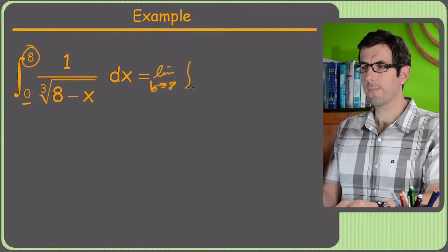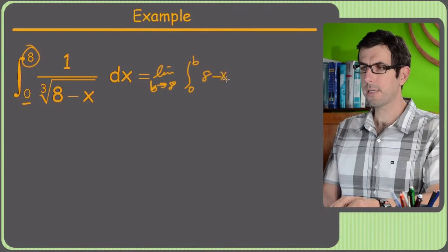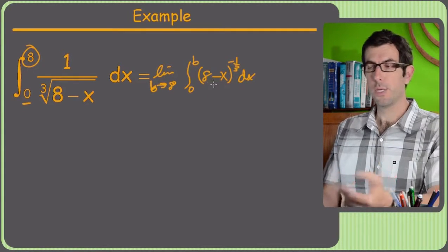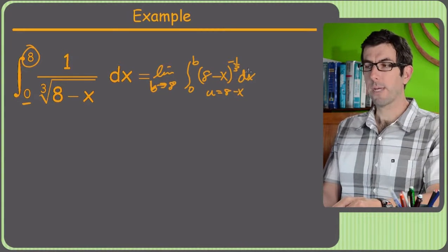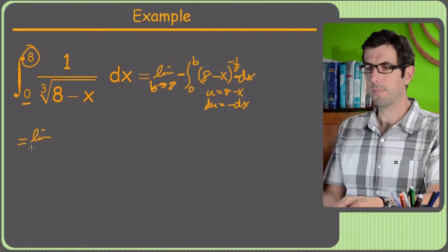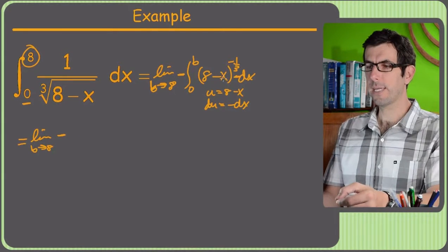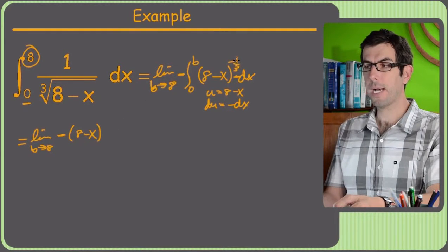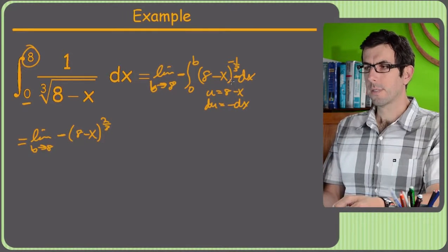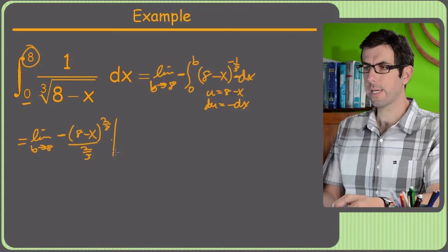We're integrating from zero to b, and I'll rewrite this as a negative power to make it easier to integrate — so it's going to be eight minus x to the negative one-third dx. This is actually a chain rule problem, or a u-sub problem, because eight minus x is the thing being raised to the negative one-third power, which means our du is negative dx. So I need a negative sign in front of the dx, which means I have to put a negative out front to compensate. So we've got the limit as b approaches eight of negative.